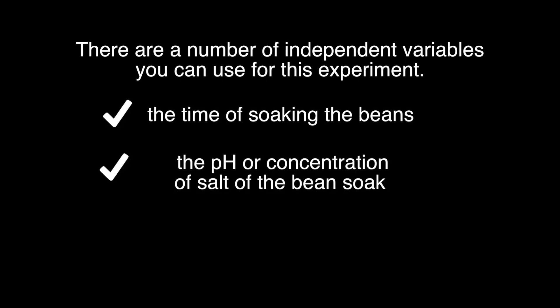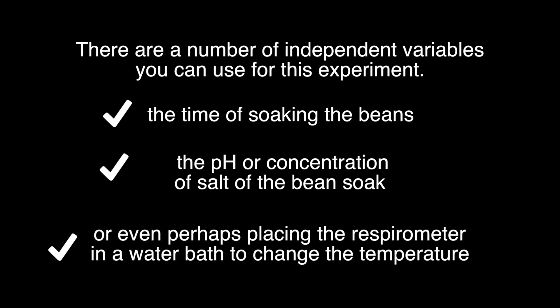There are a number of independent variables you can use for this experiment. Some may include the time of soaking the beans, perhaps the pH or concentration of salt of the bean soak, or even perhaps placing the respirometer in a water bath to change the temperature.